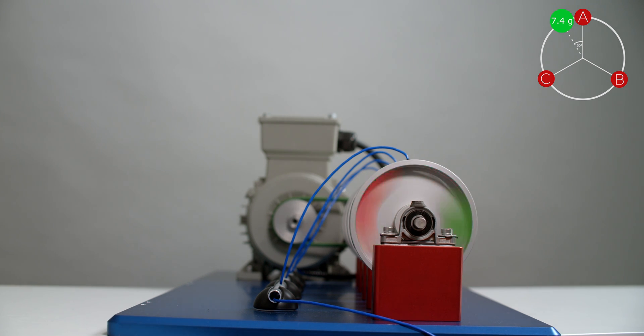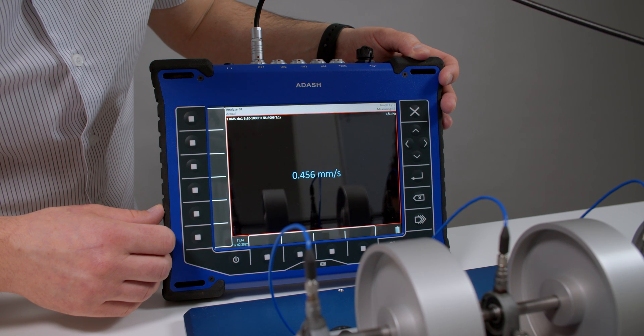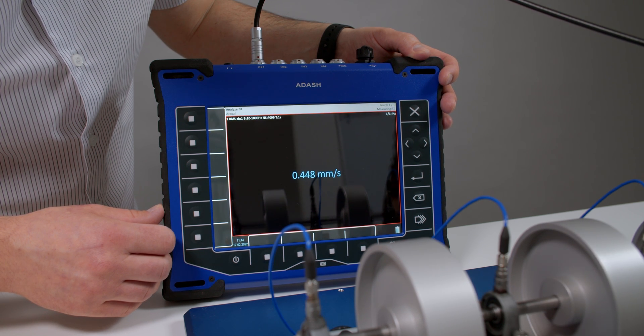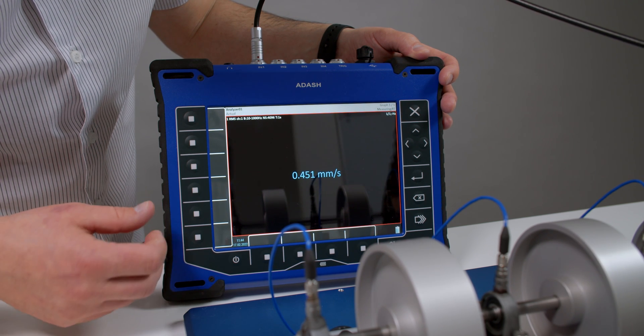Curious to see the residual vibration. Vibrations dropped from 2 millimeters per second to 0.45 millimeters per second. There is no bad result with using phone to balance the rotor, right?